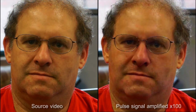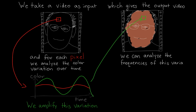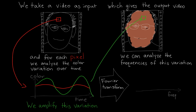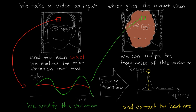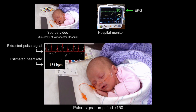In this example, the pulse signal is amplified 100 times. We can also analyze the frequencies of this signal and extract the heart rate. This doesn't require attaching any sensors to the patient, and the accuracy is comparable with hospital-grade monitors.